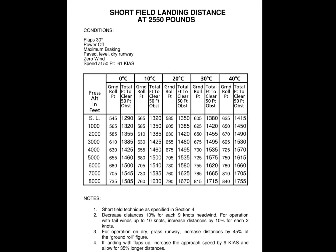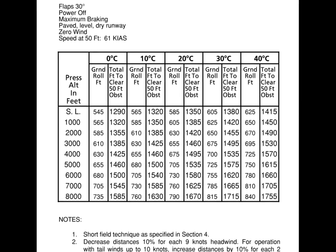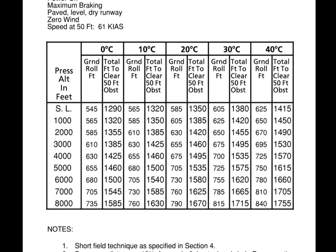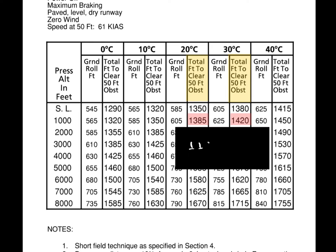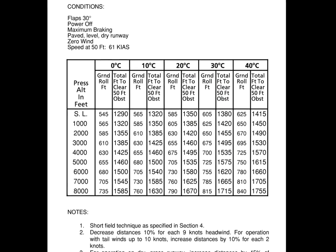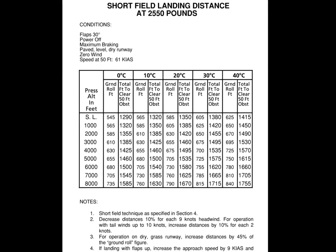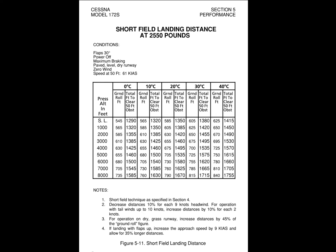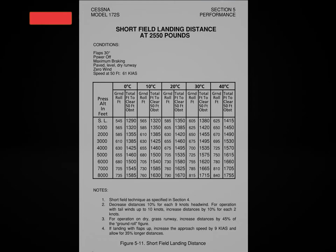And if we repeat the same process to determine the total distance we will need to clear a 50-foot obstacle on our threshold and land, our landing distance will end up being 1197.54 feet. And there you have it guys, easy math that will keep us safe on every takeoff and landing. Don't forget to subscribe and to check our other courses at myeasyflight.com. Thanks for watching.